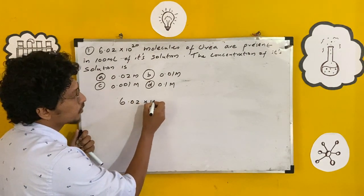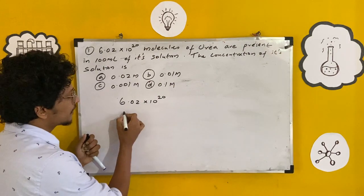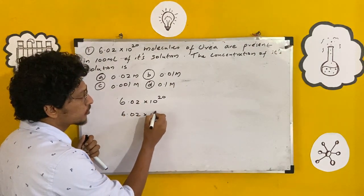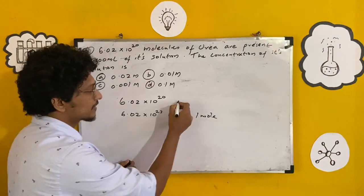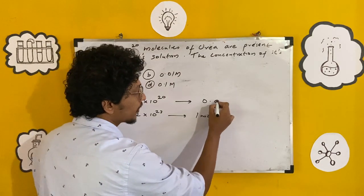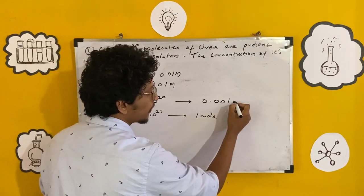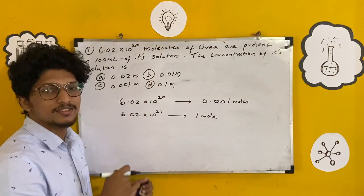We know 6.02 × 10²³ is one mole, right? So 6.02 × 10²⁰ is 0.001 moles. Now we have to calculate the concentration.